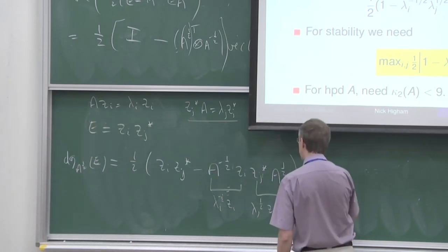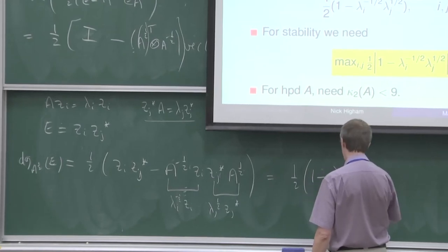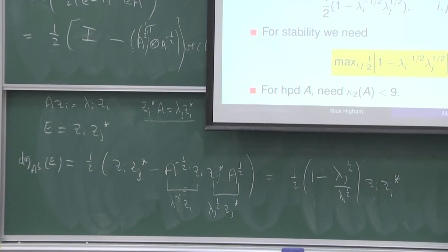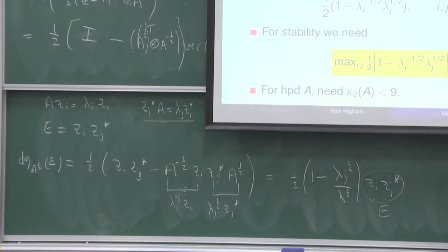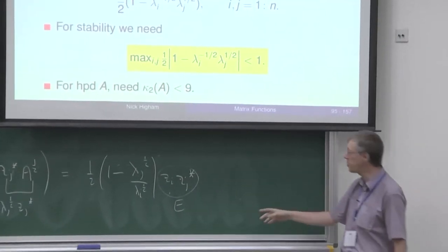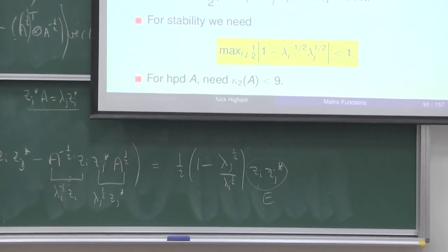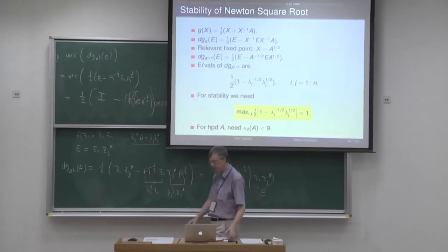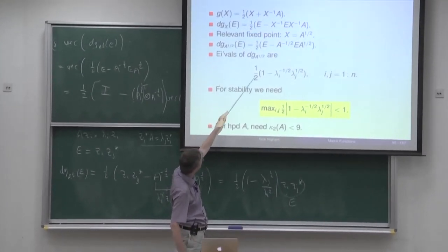Simplifying, we get a half times (1 minus lambda_j^{1/2} / lambda_i^{1/2}) times z_i z_j^*. This rank-one E is indeed an eigenvector of the Fréchet derivative, and the eigenvalue is that factor. So I've essentially justified that the eigenvalues of the Fréchet derivative are these quantities. I now want those eigenvalues to be bounded by 1 in modulus.